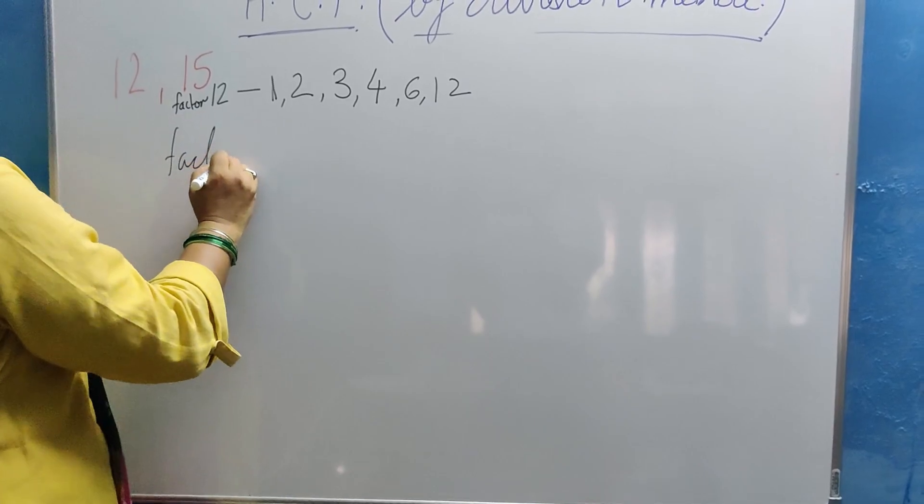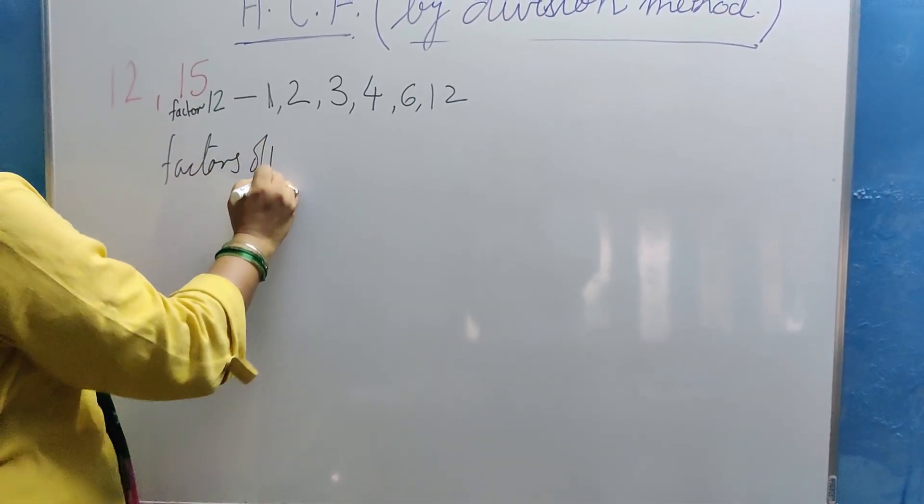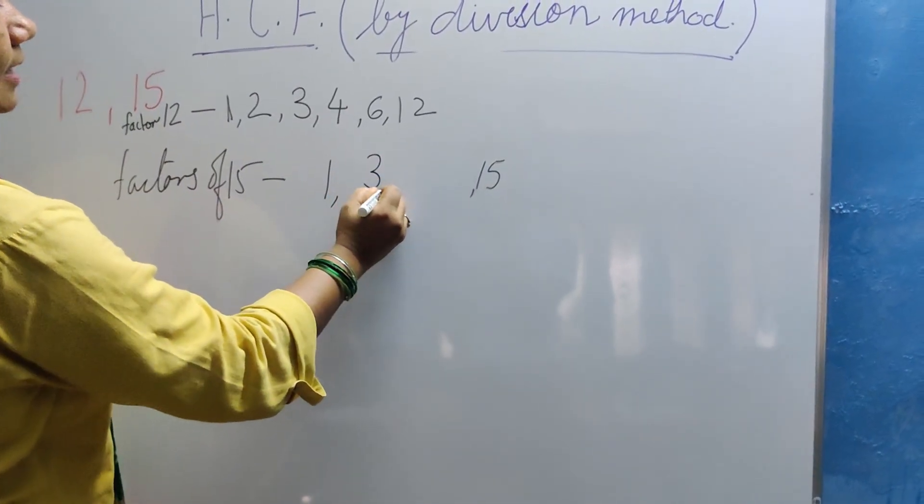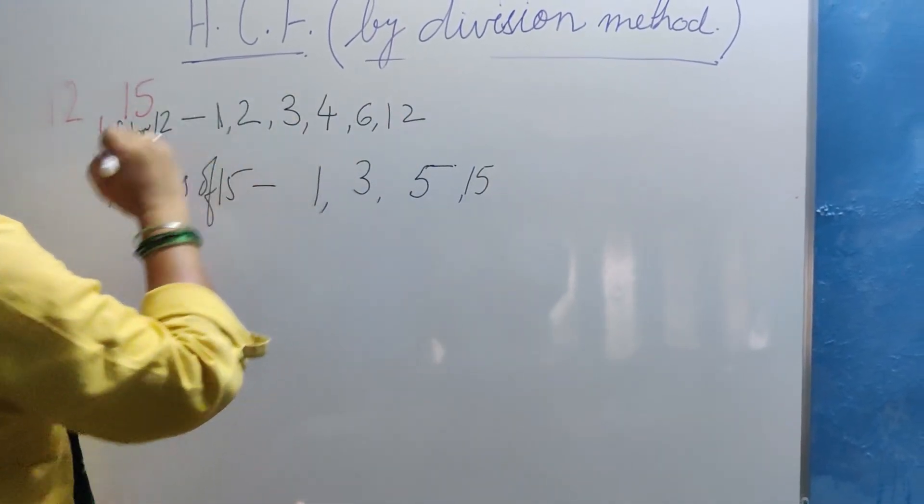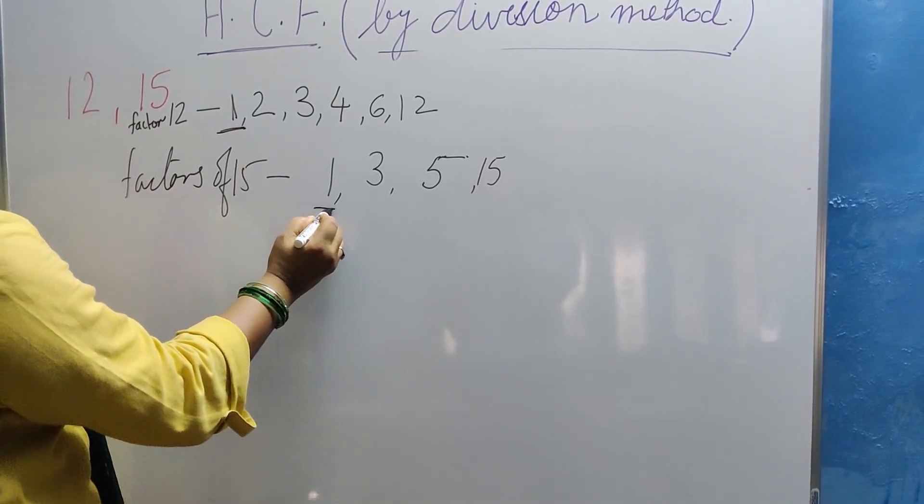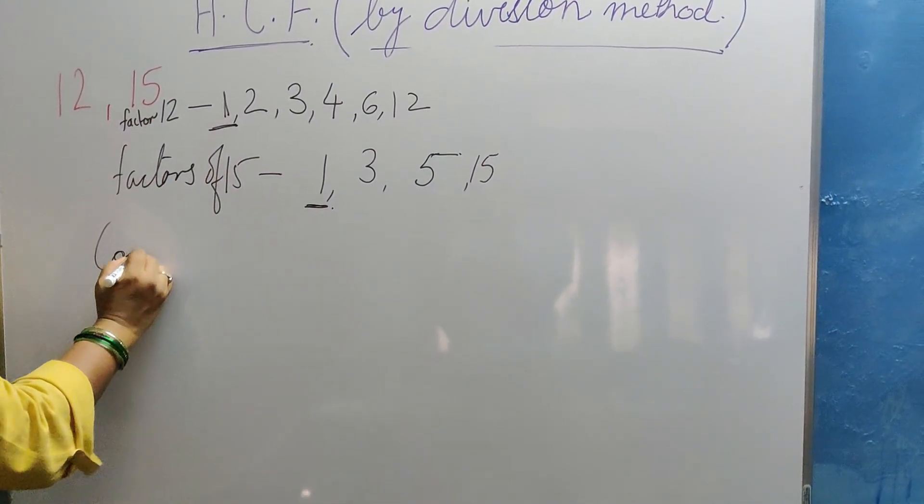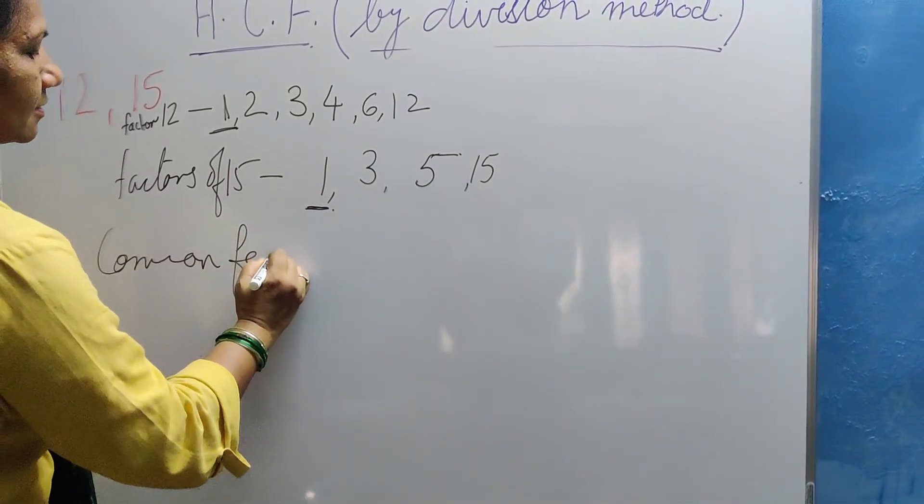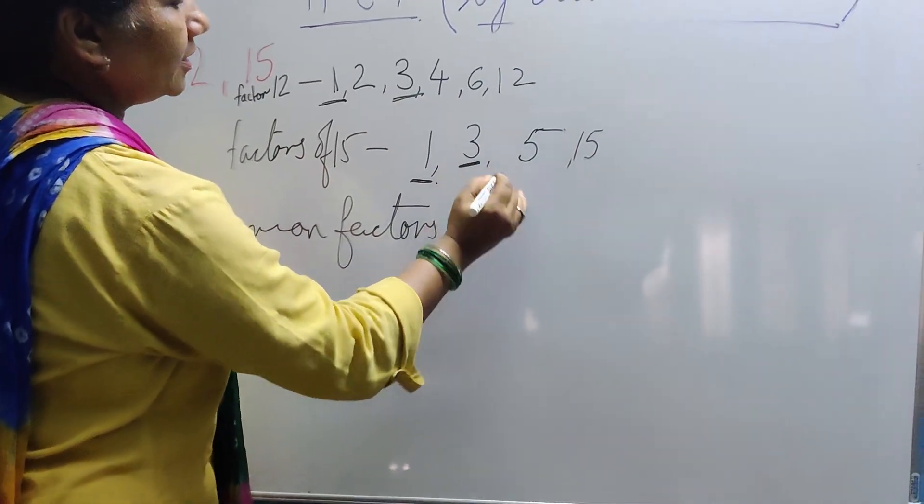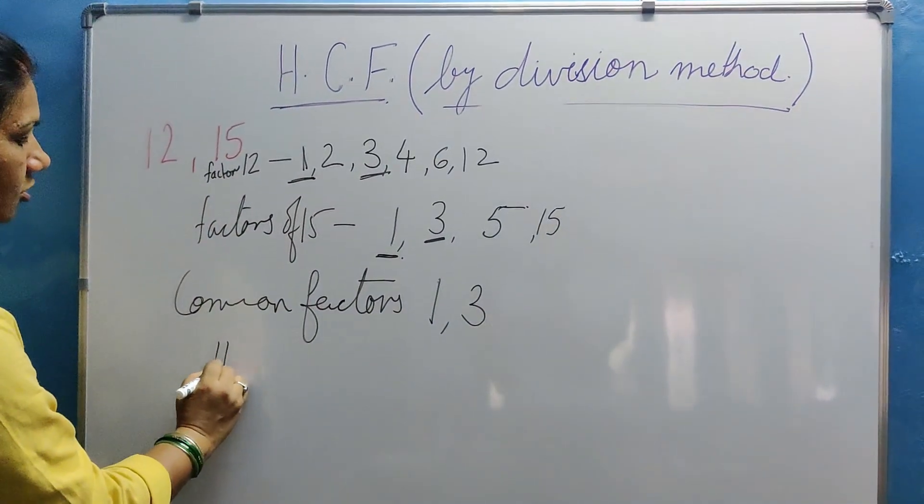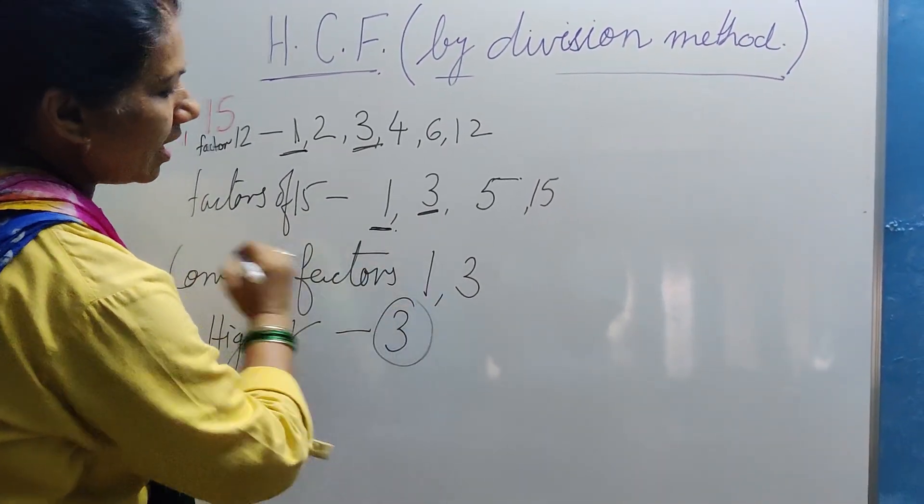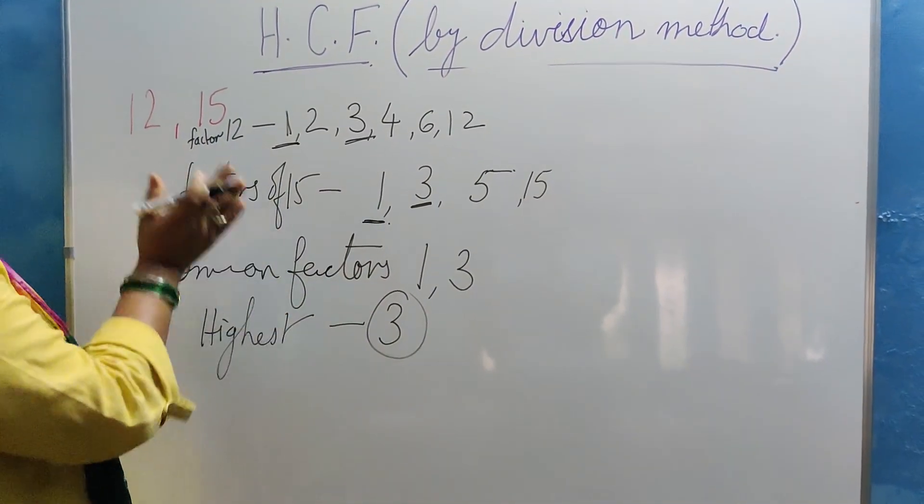Now what are the factors of 15? 1 multiplied by 15 gives you 15, then 3 multiplied by 5. Now what is the highest common factor among these? 1 is a common factor, here also 1 is a common factor. What are the common factors? 1 and even you find 3. But which is the highest common factor? Highest, and that is 3. So 3 is the answer of this. But this is finding out HCF by factor method.